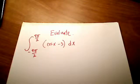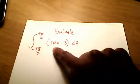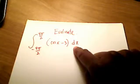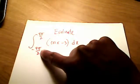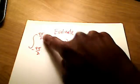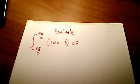OK, in this problem here, we are going to evaluate this integral of cosine x minus 3 dx. And the lower interval is going to be negative 9π over 2, and the upper is positive 9π over 2.